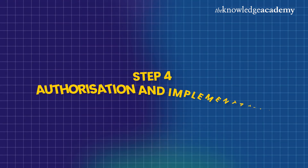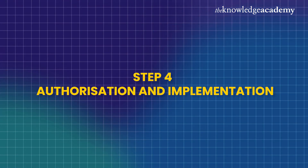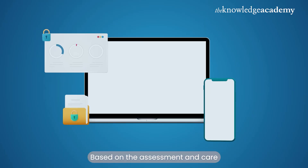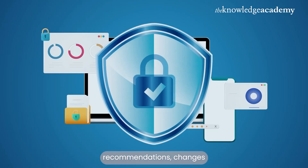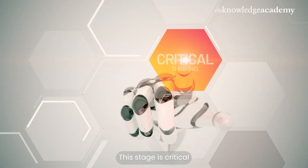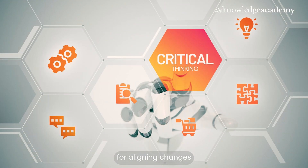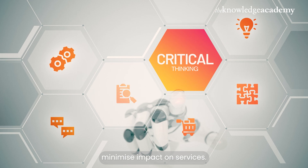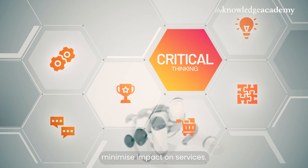Step 4: Authorization and Implementation. Based on the assessment and CAB recommendations, changes are authorized and scheduled for implementation. This stage is critical for aligning changes with business activities to minimize impact on services.